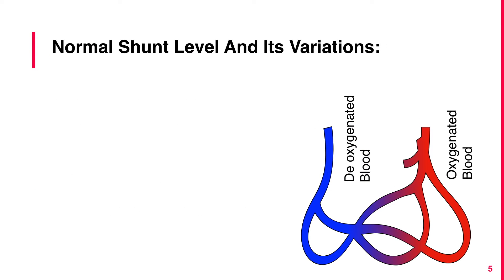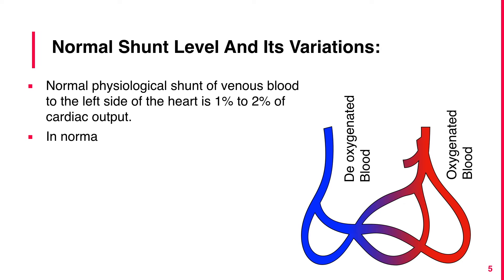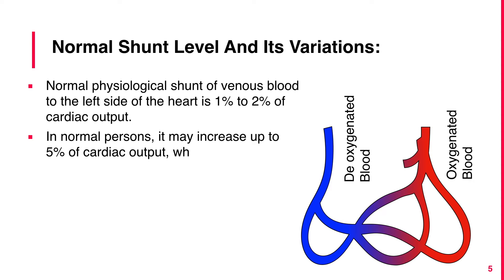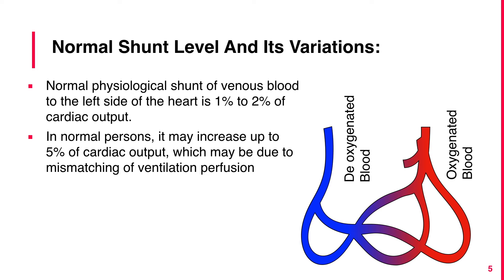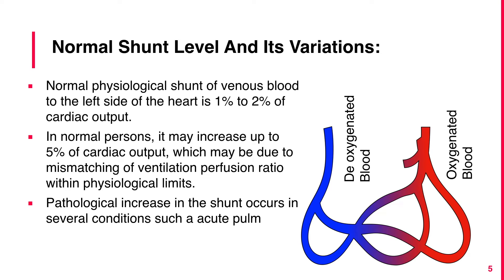Normal physiological shunt of venous blood to the left side of the heart is 1% to 2% of cardiac output. In normal persons it may increase up to 5% of cardiac output, which may be due to mismatching of the ventilation-perfusion ratio within physiological limits. Pathological increase in the shunt occurs in several conditions such as acute pulmonary infections and bronchiectasis.